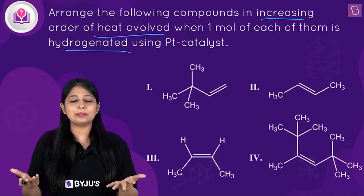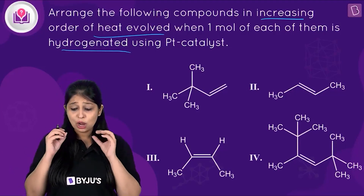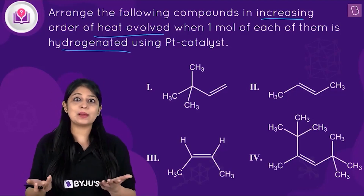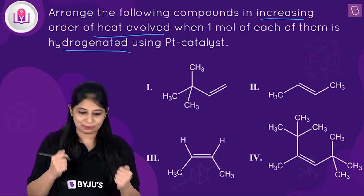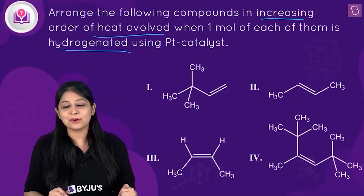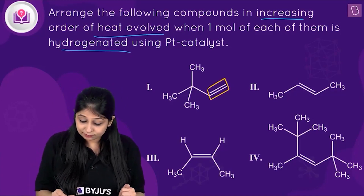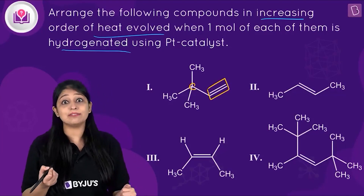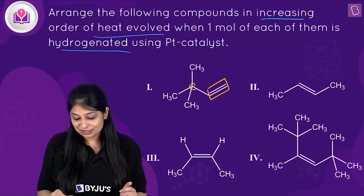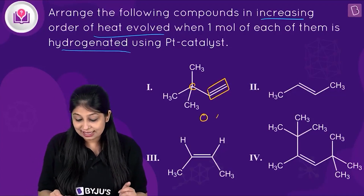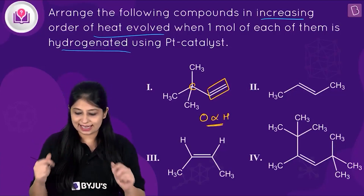So what we have to do is find out the stability order, and the opposite of that will be the order of heat evolved. The alkene with more number of alpha hydrogens will be more stable. If we count the first alkene, it has only one alpha carbon and that alpha carbon has methyl groups attached to it, so the first alkene has zero alpha hydrogens.